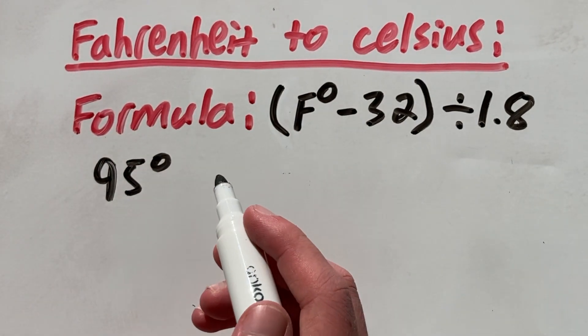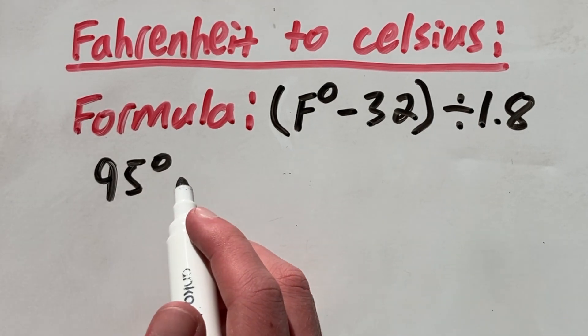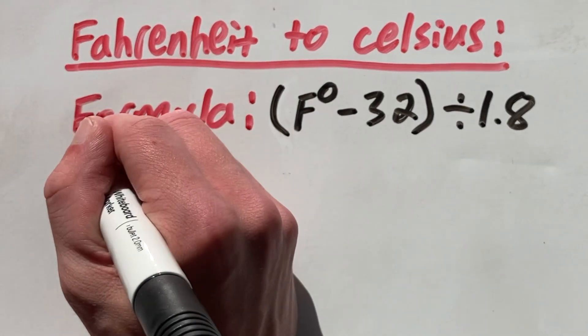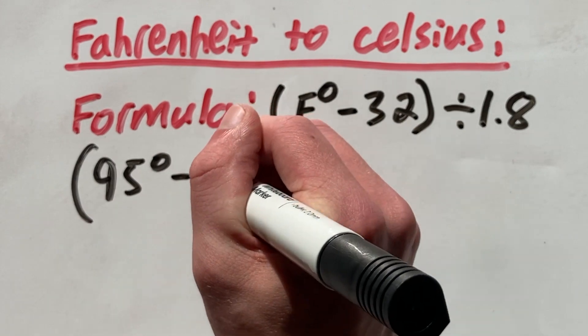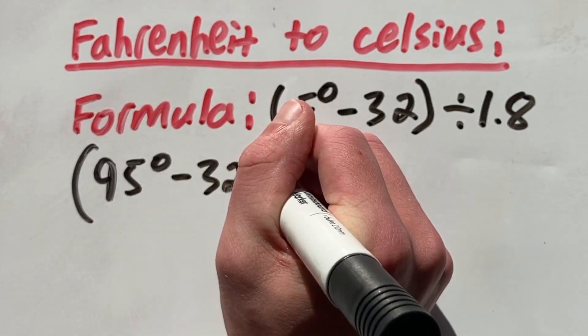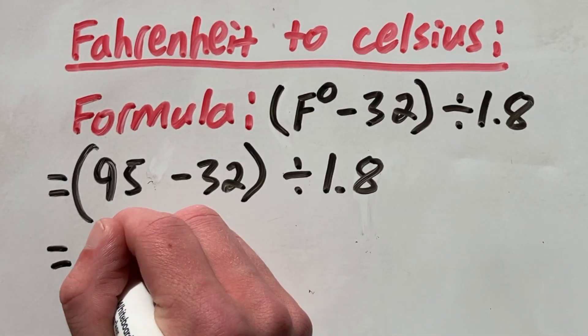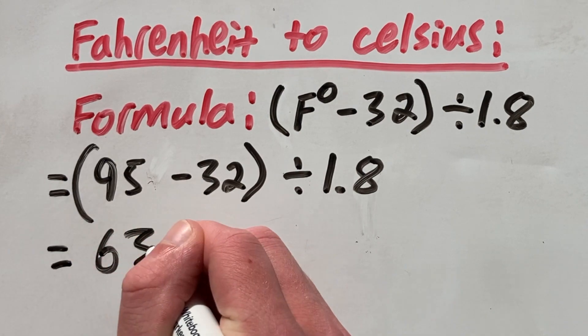So let's say we want to convert 95 degrees Fahrenheit to Celsius. Well let's plug 95 into this formula. And that gives us 95 degrees minus 32 all divided by 1.8.